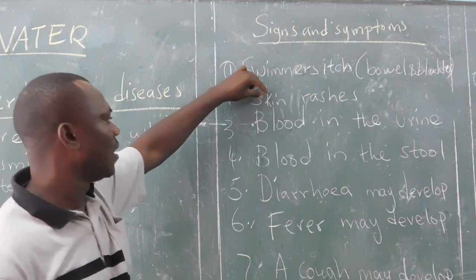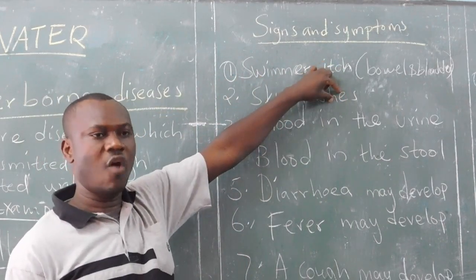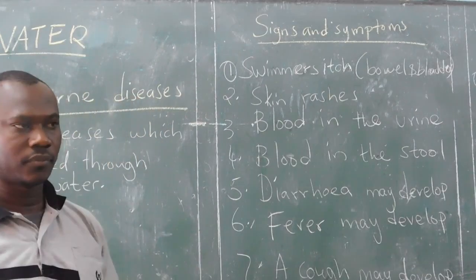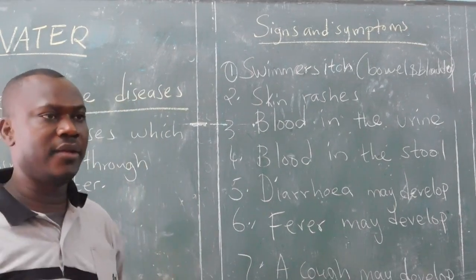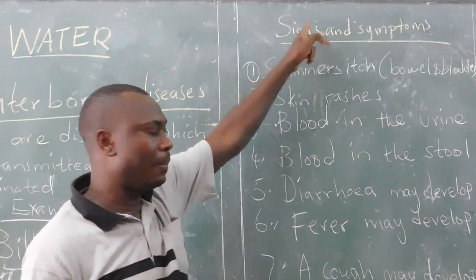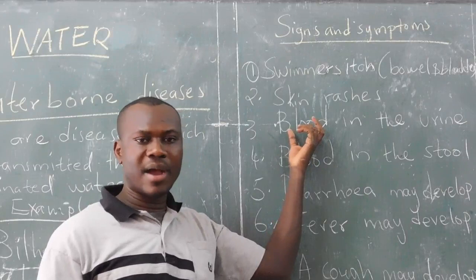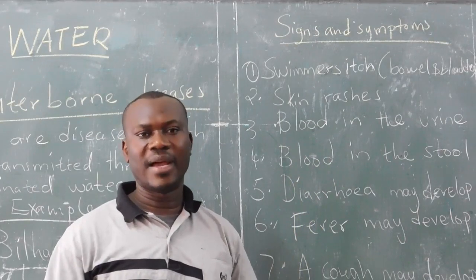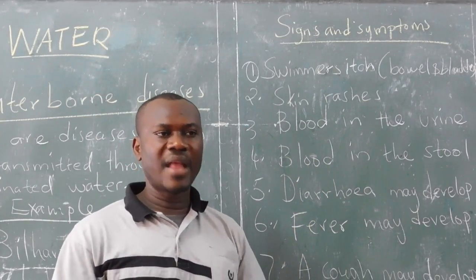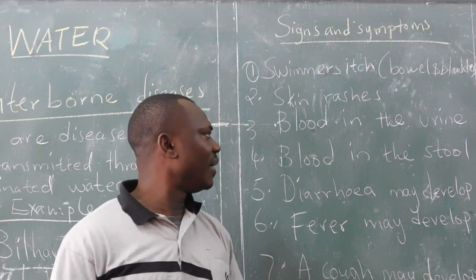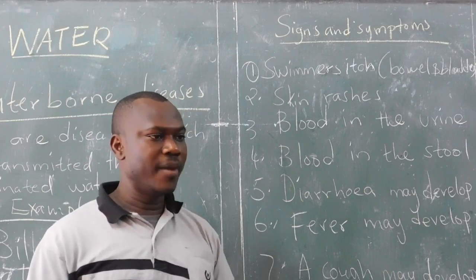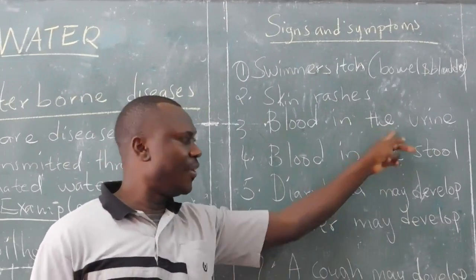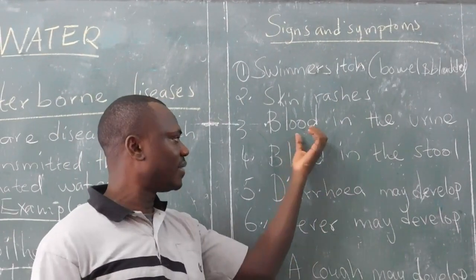Also, when these worms are in your body, you might develop skin rashes. Sometimes you see rashes appearing on the skin, which may show that you have bilharzia. Remember, these worms mainly tamper with the bladder. So when they feed on the bladder, blood will start oozing from the bladder and the intestine, and you might notice traces of blood in the urine.